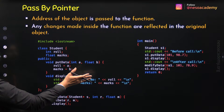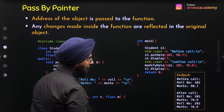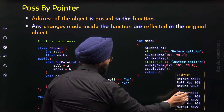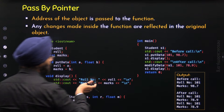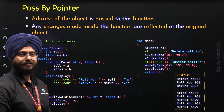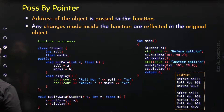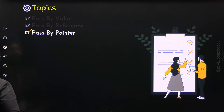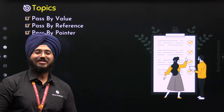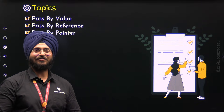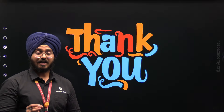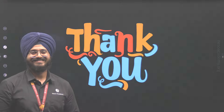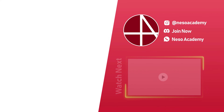When we execute the program, we get the same output as before: roll number 101 and marks 78.9 in both cases. With this, we have understood pass by pointer as well, and we are done with this lecture. Thank you for watching. I will see you in the next one.